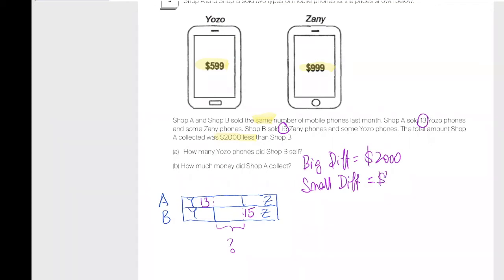Which is 400. If you know that the big difference, if you know that all together Shop A collected 2,000 less, and every Yozo phone is 400 cheaper, so how many more Yozo phone did Shop A sell?